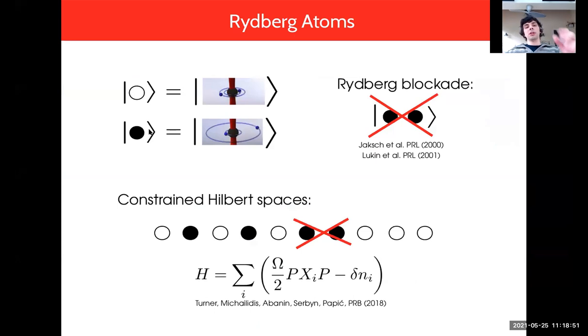I mentioned they tend to have strong interactions and this is actually quite simple to think about. The main interaction is that if you have two excited Rydberg atoms close to each other, they experience a strong energetic penalty. At a first approximation you can actually disregard such states, which is called the Rydberg blockade.